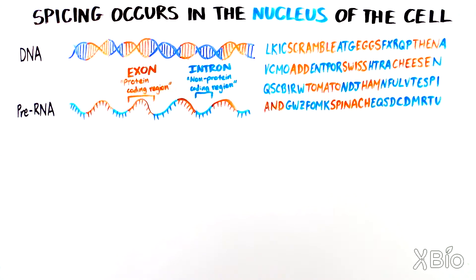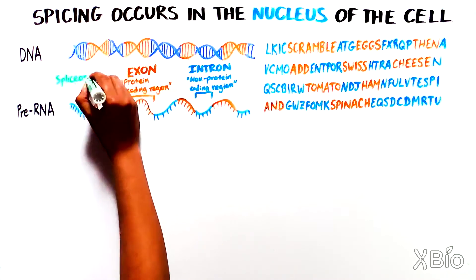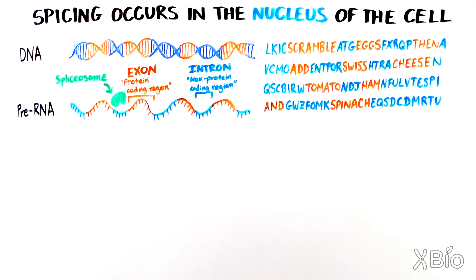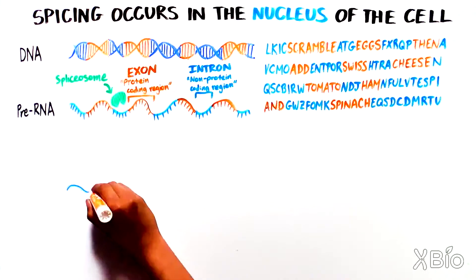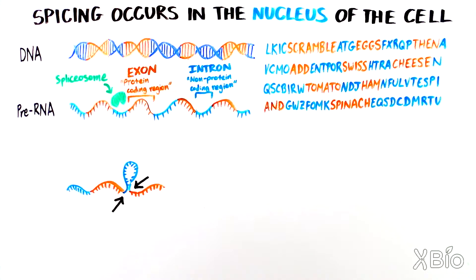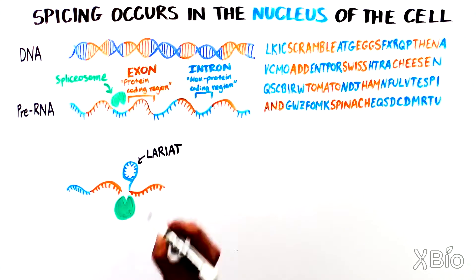The introns are removed by a large protein and RNA complex called the spliceosome, here shown between the first and second exons. On either end of the intron are particular RNA sequences which the spliceosome brings together. Then the spliceosome cuts the bases close to exon number 1, forming a loop called a lariat.